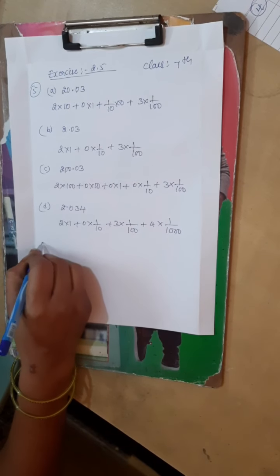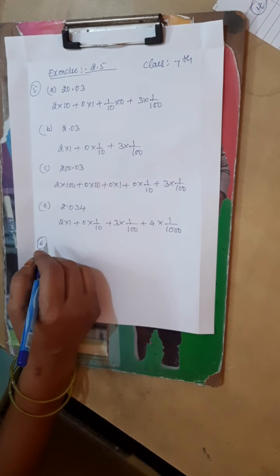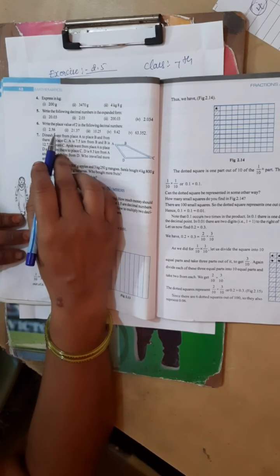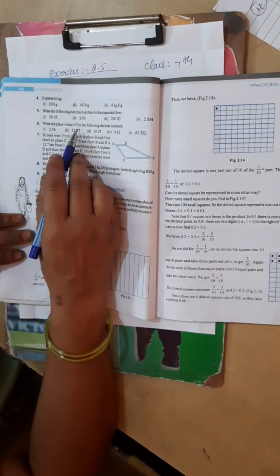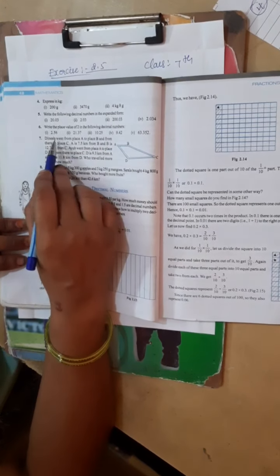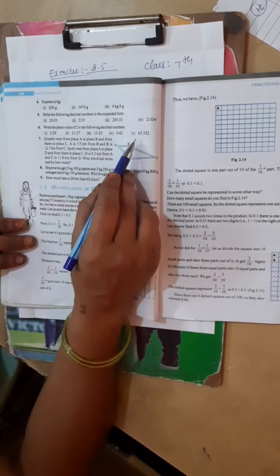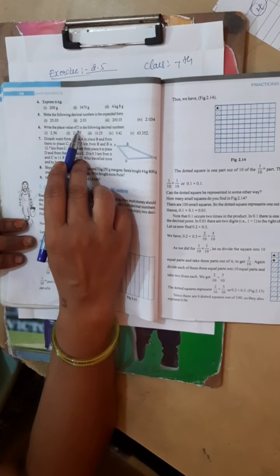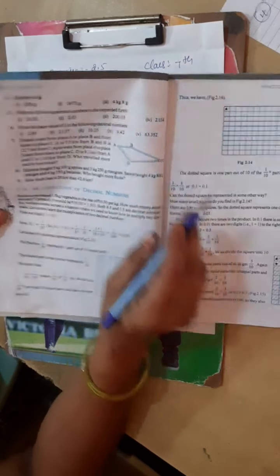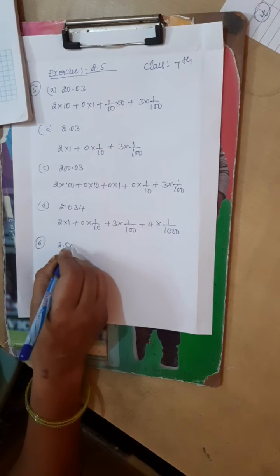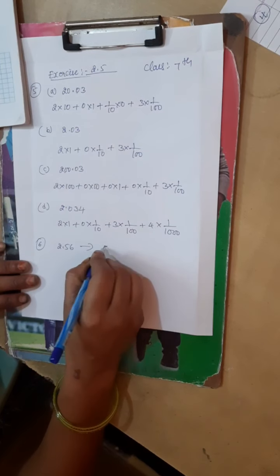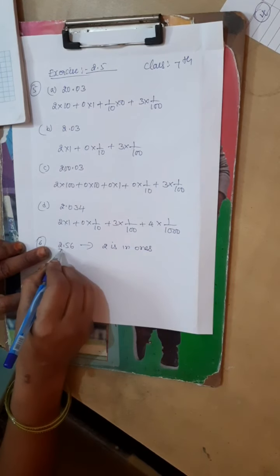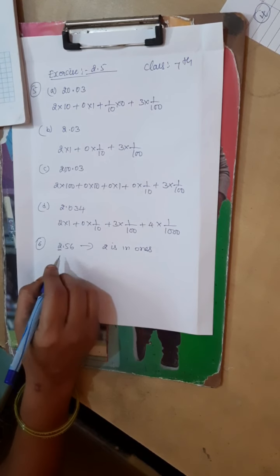Sixth main: write the place value of 2 in the following decimal numbers. So it will be 1, 2, 3, 4, 5 decimal numbers. Write the place value, understand? Listen. First one 2.56, so it will be the place value you know, so 2 is in ones.